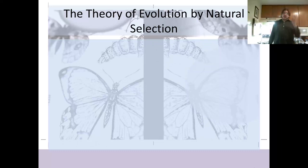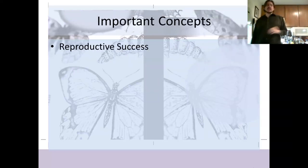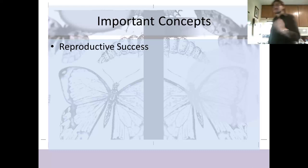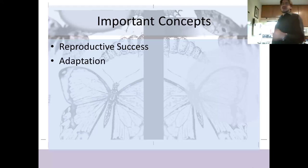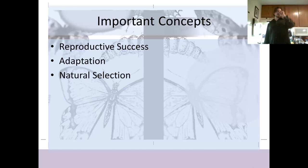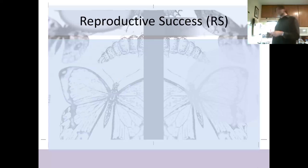So how did they come to produce 14 different species that exploit different food sources? Darwin came up with a theory of natural selection to explain how traits arise in different habitats. The important concepts in natural selection include reproductive success — this is a big one. With modern science, we know this is a huge factor. Adaptation is also important in natural selection. And we'll need to talk about natural selection and evolution with regards to gene frequency.